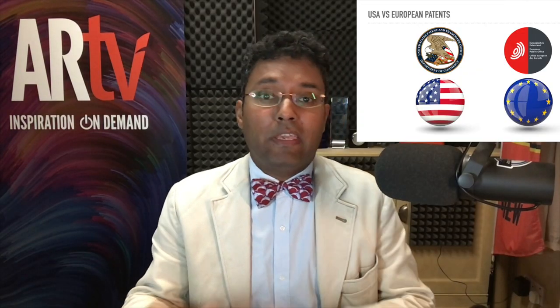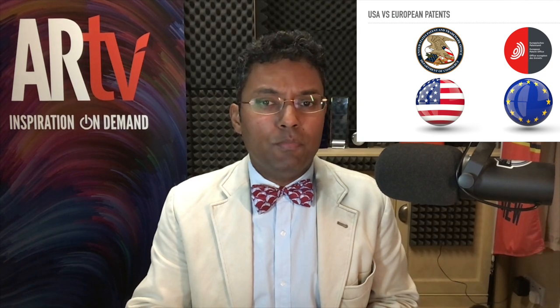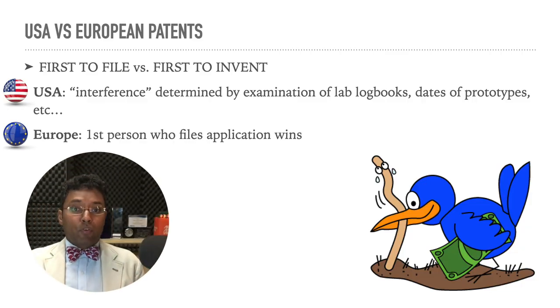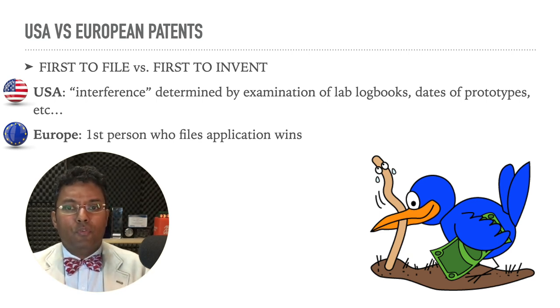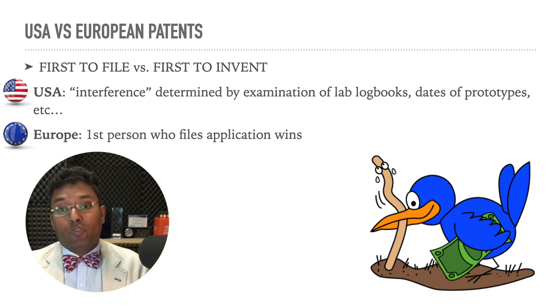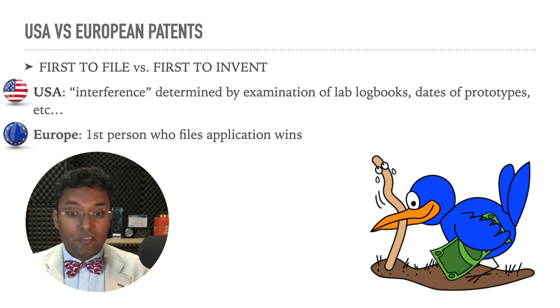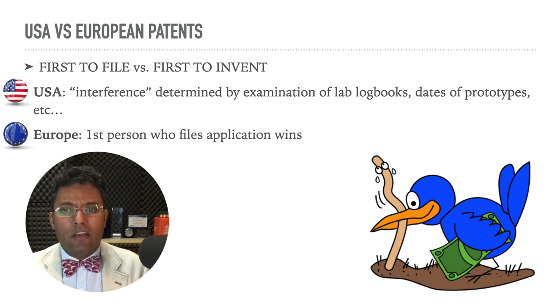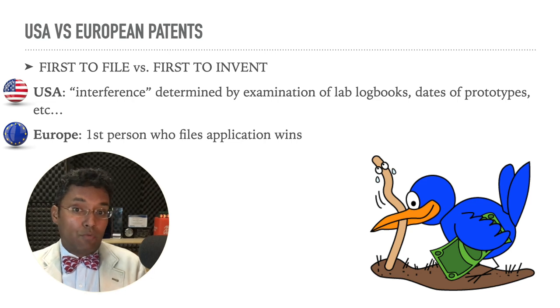As you write your patent application for the US or the European market, there are quite a few differences between the two, however you are able to write in a way that fulfills both requirements. First of all, in Europe, the first person who files the application wins. So if two people come up with the same idea, the one who files first wins. While in the US, two people can file, but the system allows for an examination of logbooks and protocols in your lab to see who is the real person who invented it first, and then it's granted to that person.